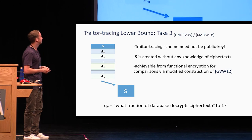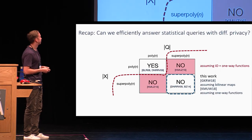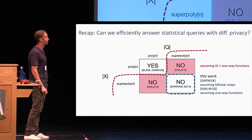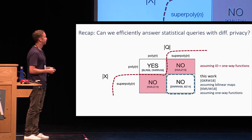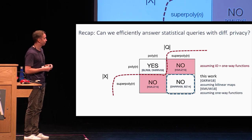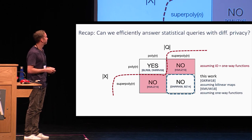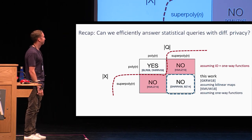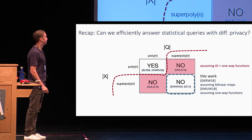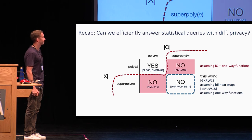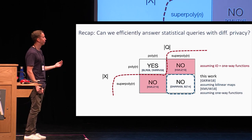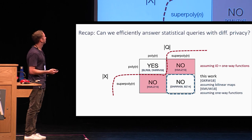To recap: in both of these papers we are replicating a lower bound for answering statistical queries with differential privacy and removing the dependence on indistinguishability obfuscation — replacing it with bilinear maps in the Rishabh et al. paper and one-way functions in our paper. There is a lot of future work to be done: expanding this to remove all dependence on indistinguishability obfuscation, and also reducing the complexity of the queries that are allowed, since the query predicates here are complex cryptographic decryption operations. It would be nice to have lower bounds for simpler queries showing that even simple queries are impossible to answer. Thank you.